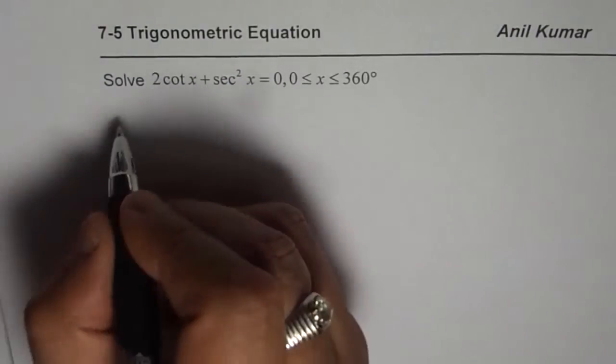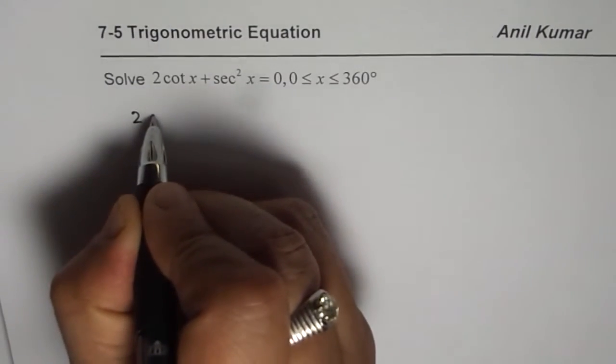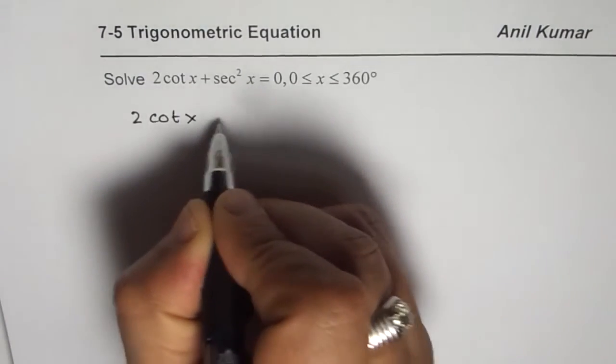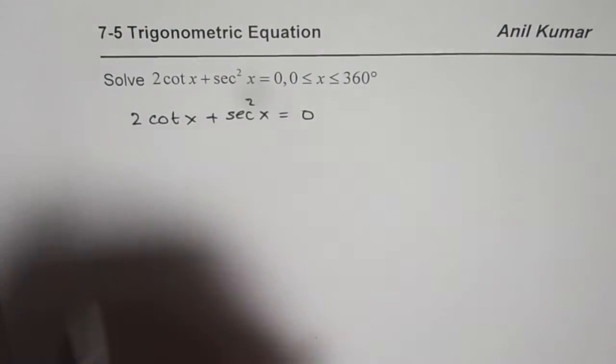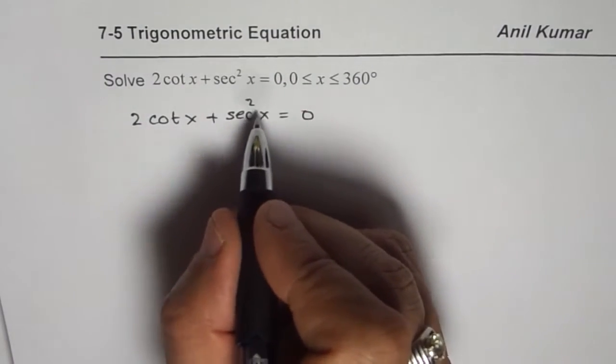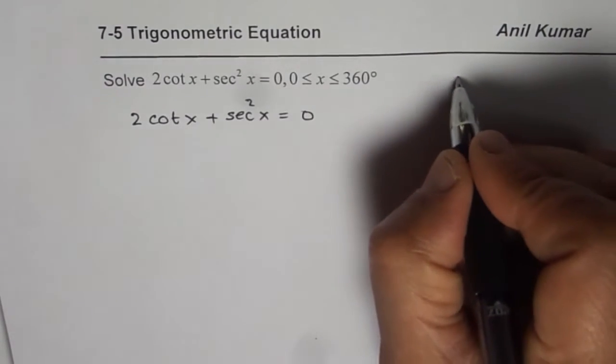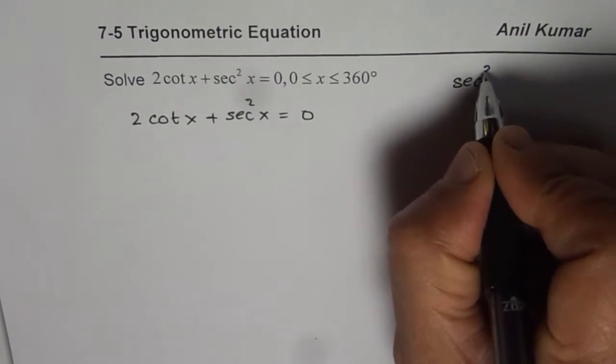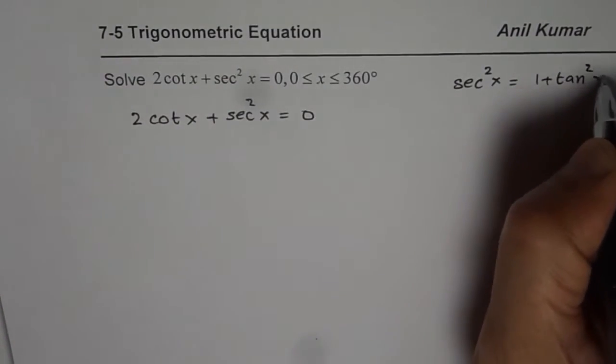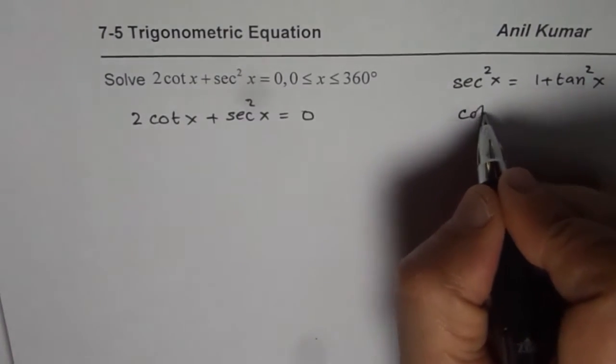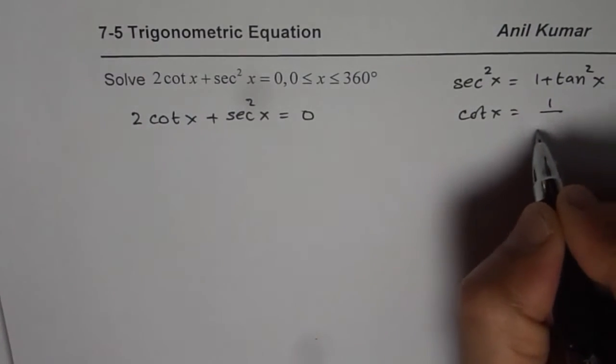So we will just rewrite and try to solve this equation which is 2 cot x plus secant square x equals to 0. We can write secant square x as 1 plus tan square x. So secant square x is 1 plus tan square x and cotangent x is 1 over tan x.